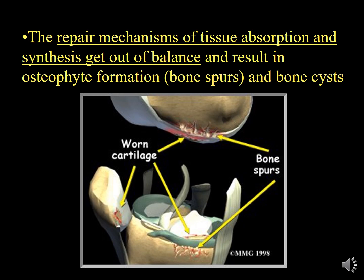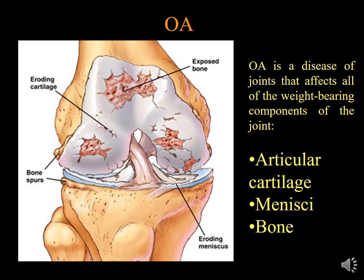Bone spurs occur at the periphery of the joint. The cartilage becomes destroyed, new bone formation occurs, and the underlying bone becomes exposed, leading to the manifestations of Osteoarthritis. Degeneration of the cartilage, exposure of the underlying bone, new bone formation, and bone spurs at the periphery of the joints are all visible here. The cartilage is eroded, the bone is exposed, and the meniscus is destroyed. All components of the joint are affected in Osteoarthritis.